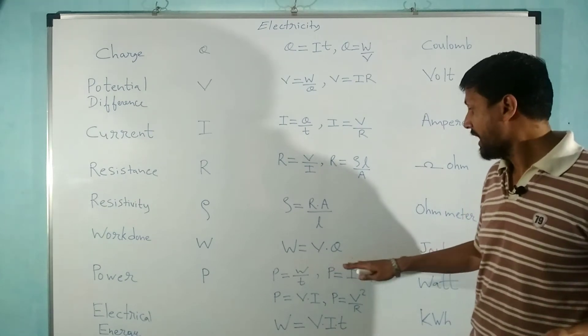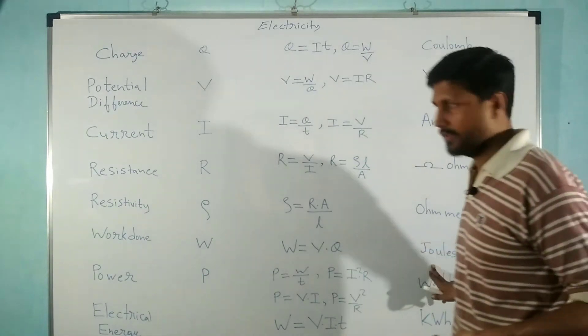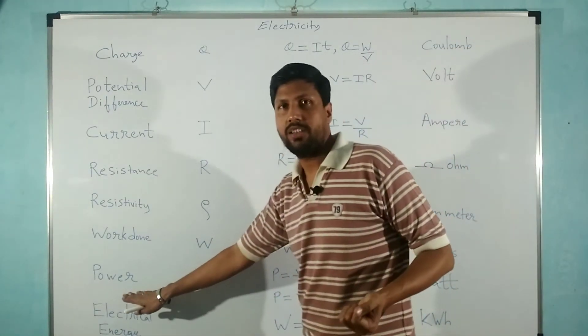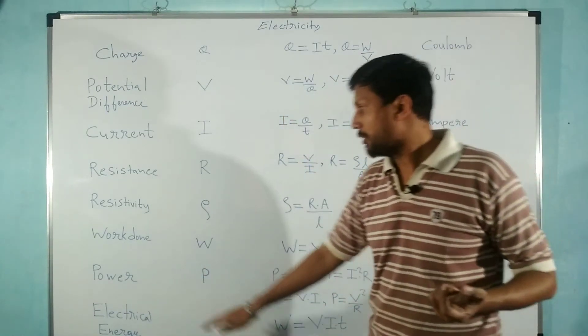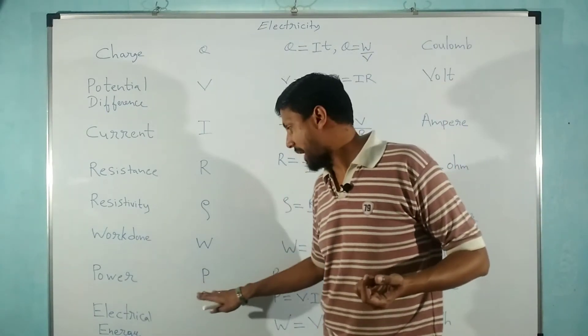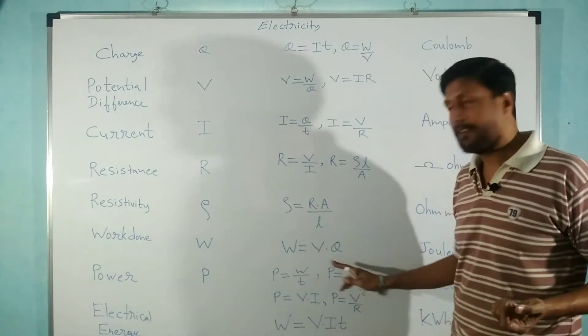Power is the rate of doing work. The symbol of power is capital P and there are four different formulas, some from mathematical jugglery.